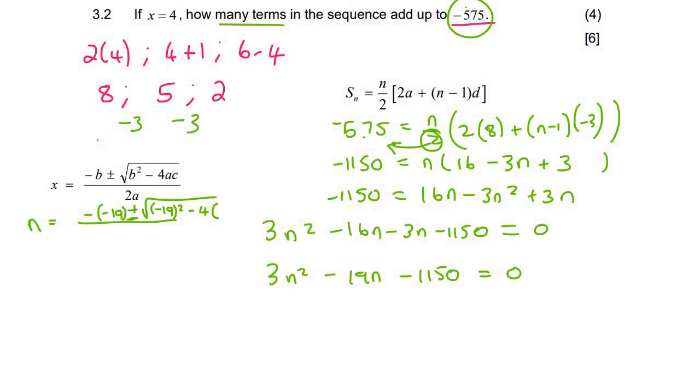And then a would have a value of 3, c would have a value of minus 1150. And then at the bottom you would have 2 times 3. And then you could go fill that all in. And so you'd find out that n is equal to 23.